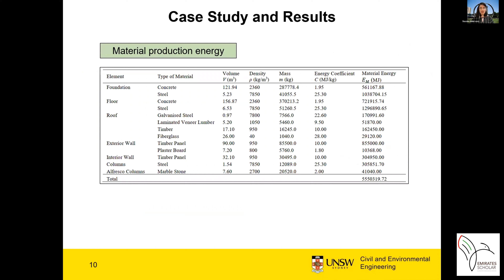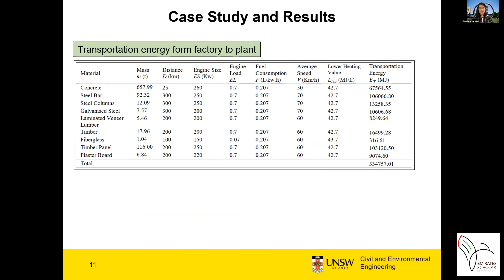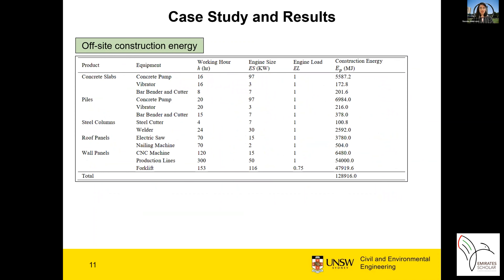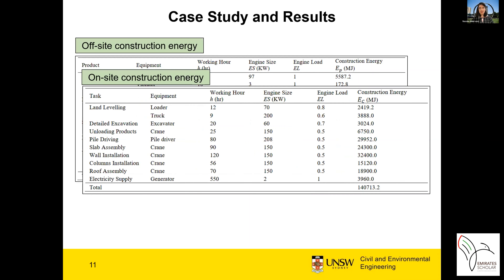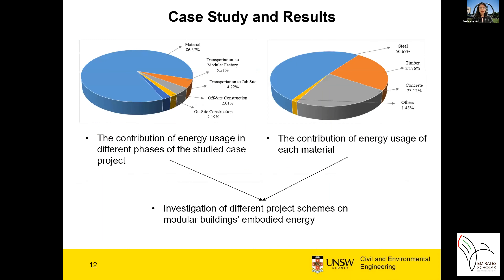These are the results from applying the framework to the case study. The case study is a modular house in Sydney. The material production energy is categorized into building elements and types of materials — mainly concrete, steel, and timber. Transportation energy is highly affected by the distances between factories and job sites. Construction energy is categorized by different tasks such as earthwork activities and module assembly using a crane. In the end, we can estimate the contribution of each stage on the energy consumption and detect the materials and elements which have the most contribution in the embodied energy.